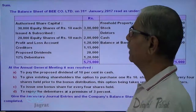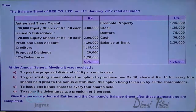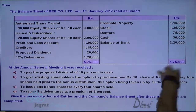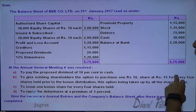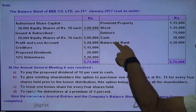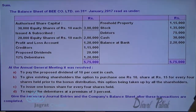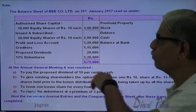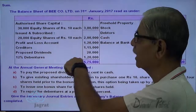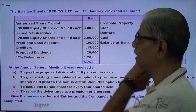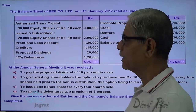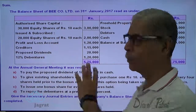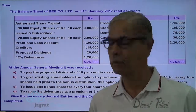The balance sheet of B Limited as on 31st January 2017 reads as follows: freehold property, stock, debtors, cash, bank balance, authorized share capital, issued and subscribed capital, profit and loss account, creditors, proposed dividend, and 12% debentures.